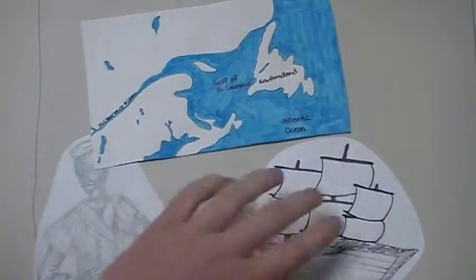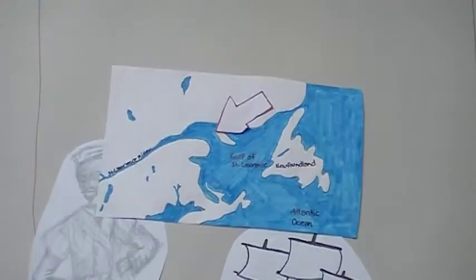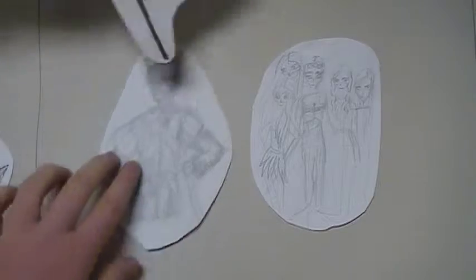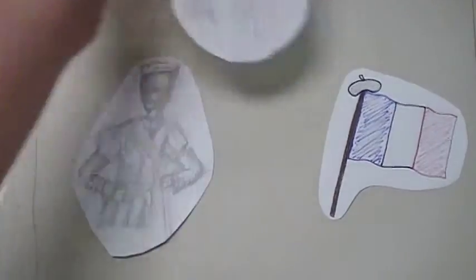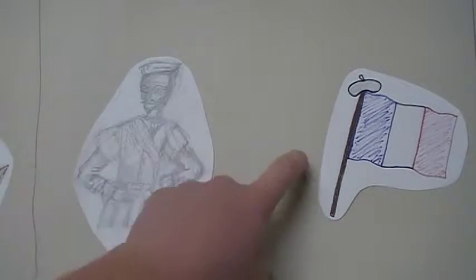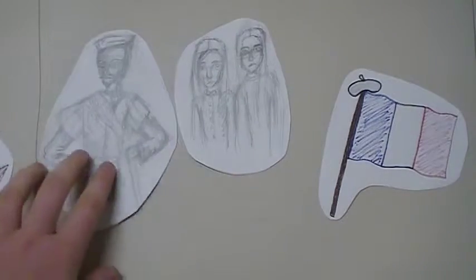where he then found the Haudenosaunee people. Despite their presence, he claimed all the new territories for France. Cartier then sailed back to France with two young men he had kidnapped. Their names were Taignoagny and Domagaya, sons of Chief Donnacona.